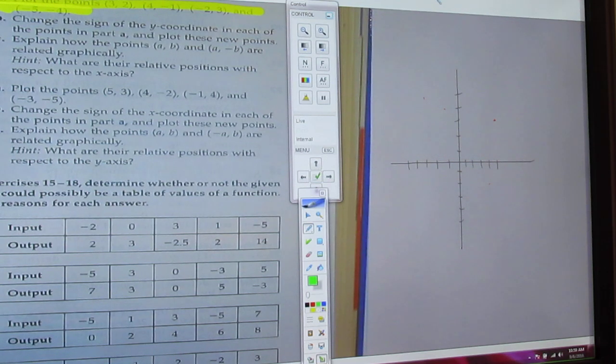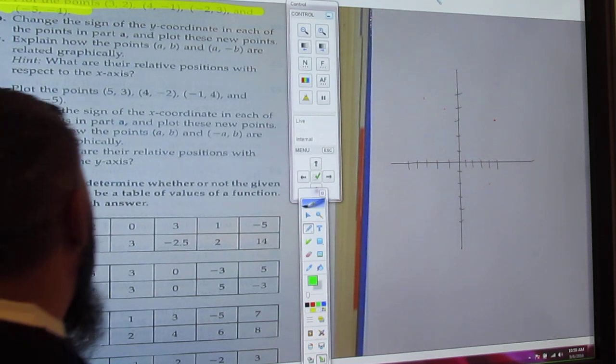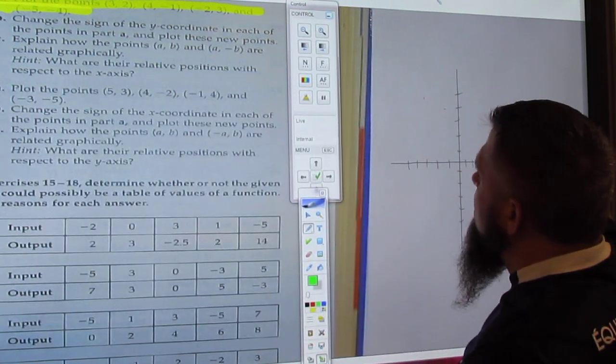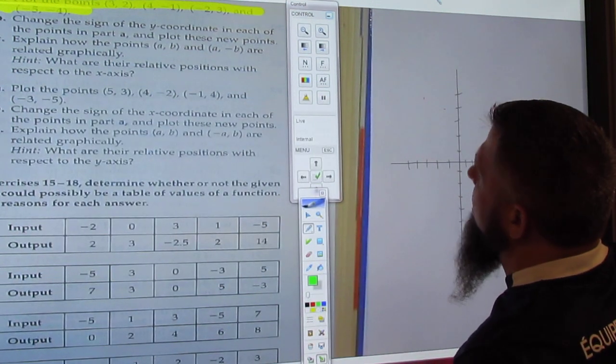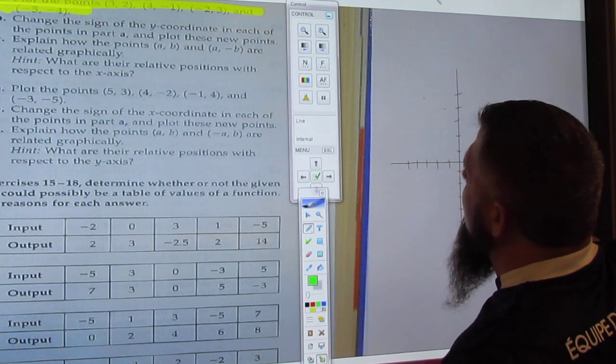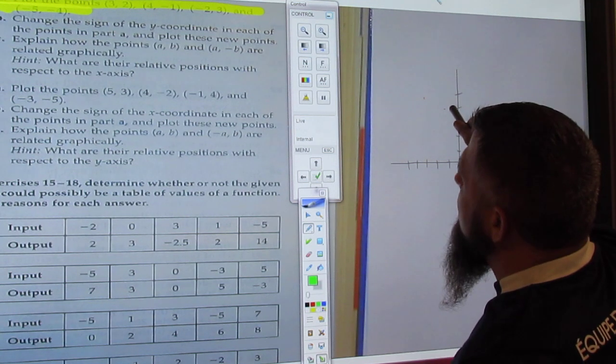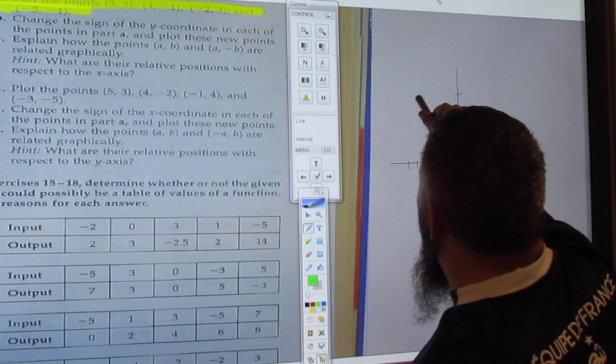We've plotted the points already. We've plotted the points 3, 2, 4, negative 1, negative 2, 3, and negative 5, 4.